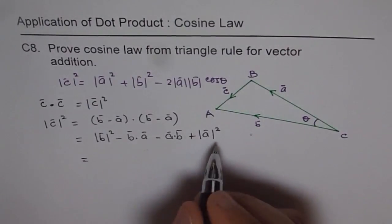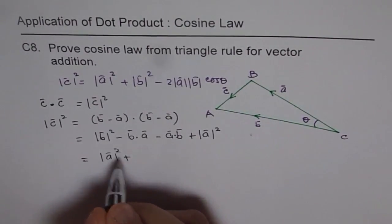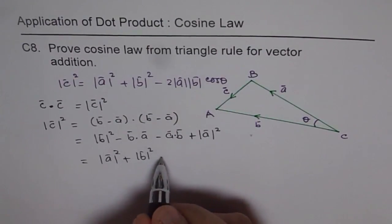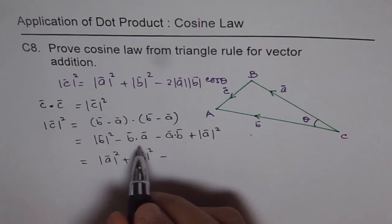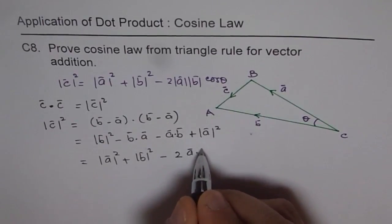Now we can reorganize this to get magnitude of A square plus B square. And here we have A dot B and B dot A, commutative property. They are same. So it is two times A dot B.